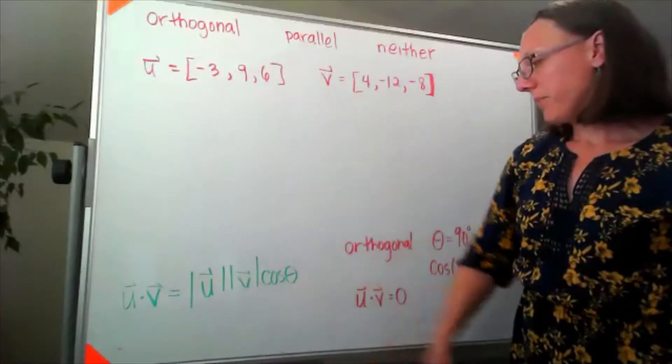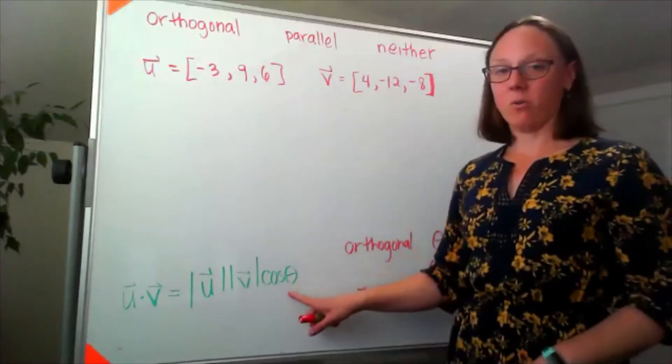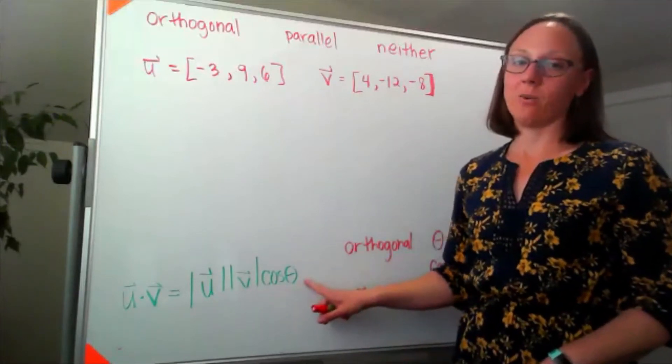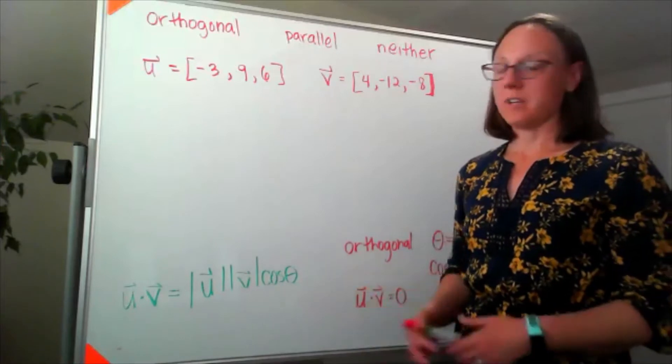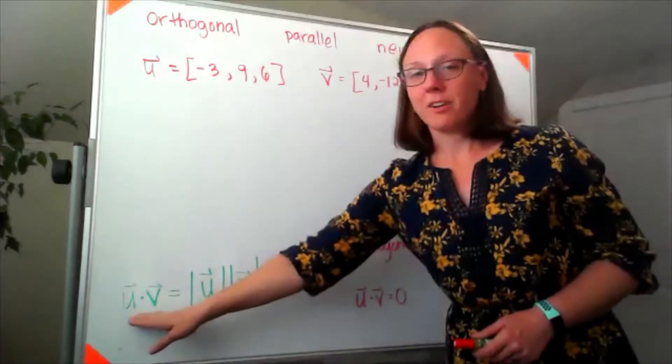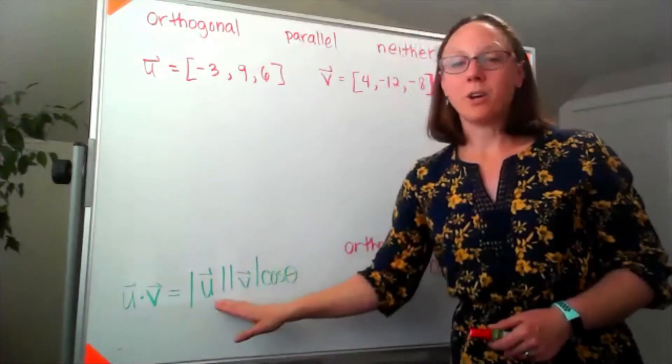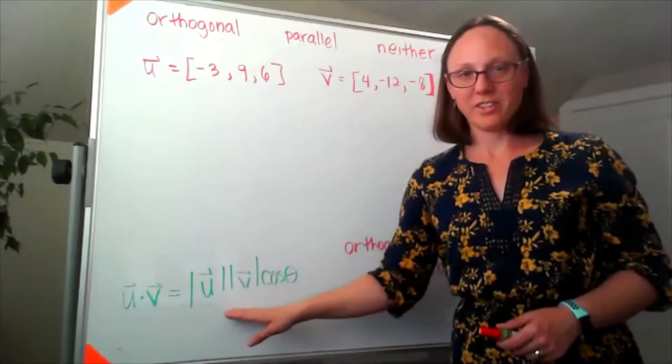Well if the angle between two vectors is 0 then I know that cosine of 0 is equal to 1, which means what we get for the dot product over here that should be equivalent to what we get when we multiply the magnitudes together.